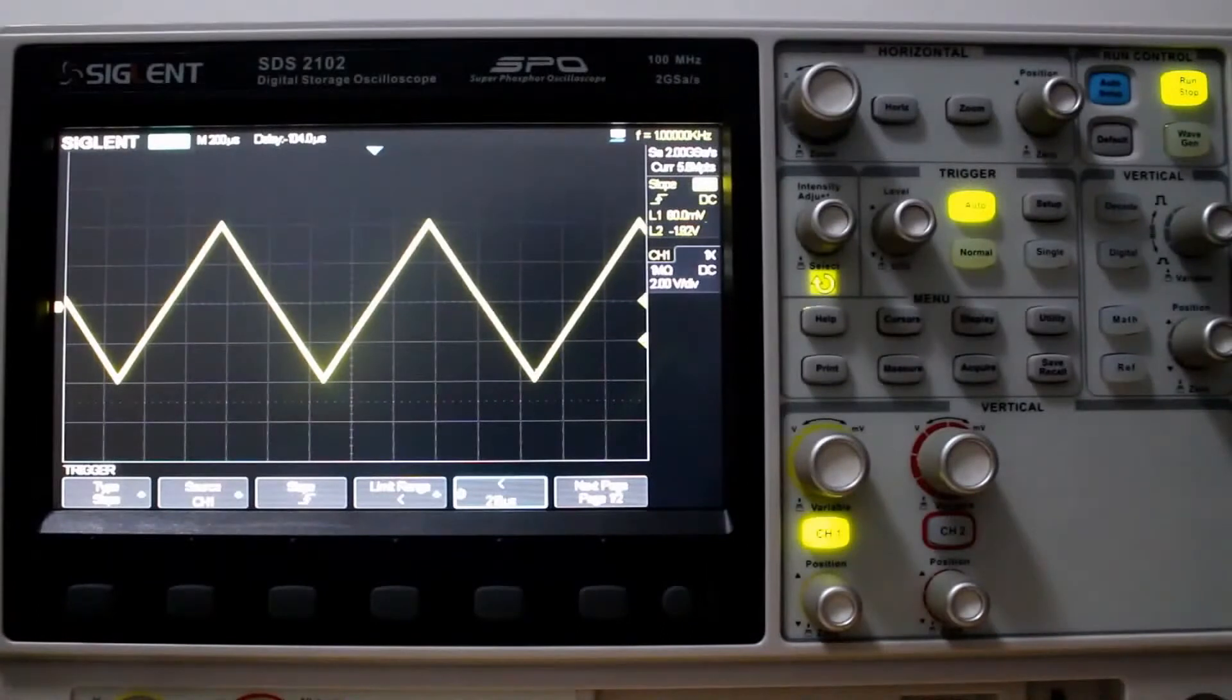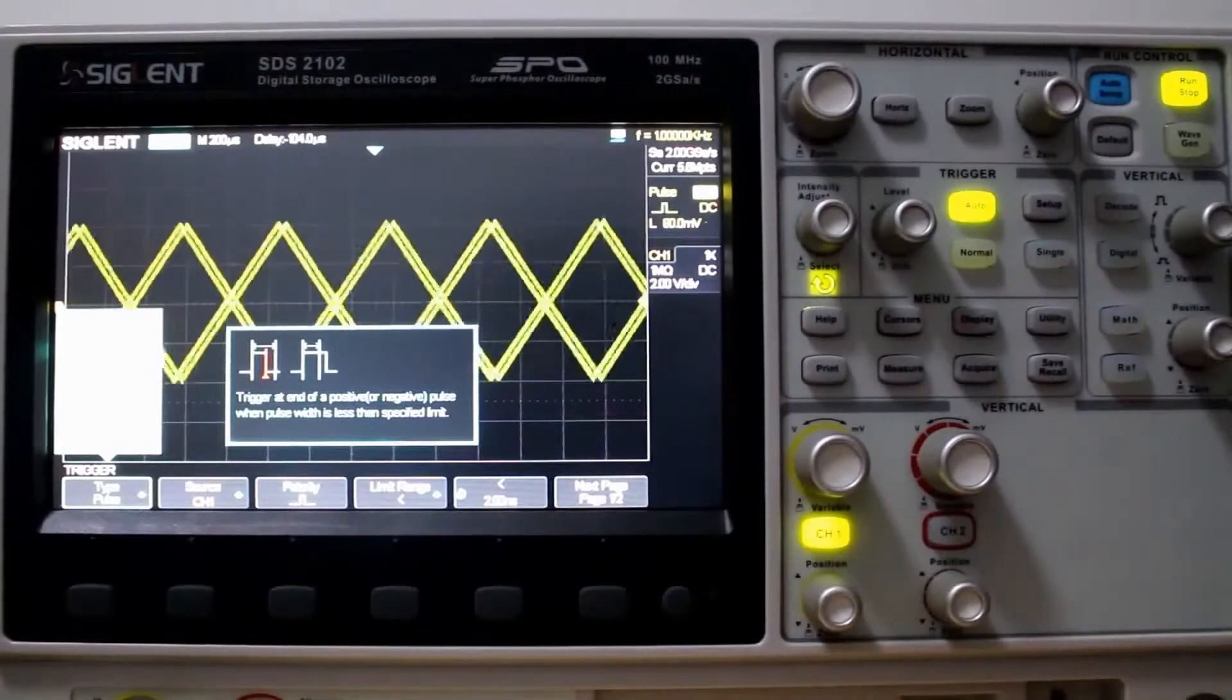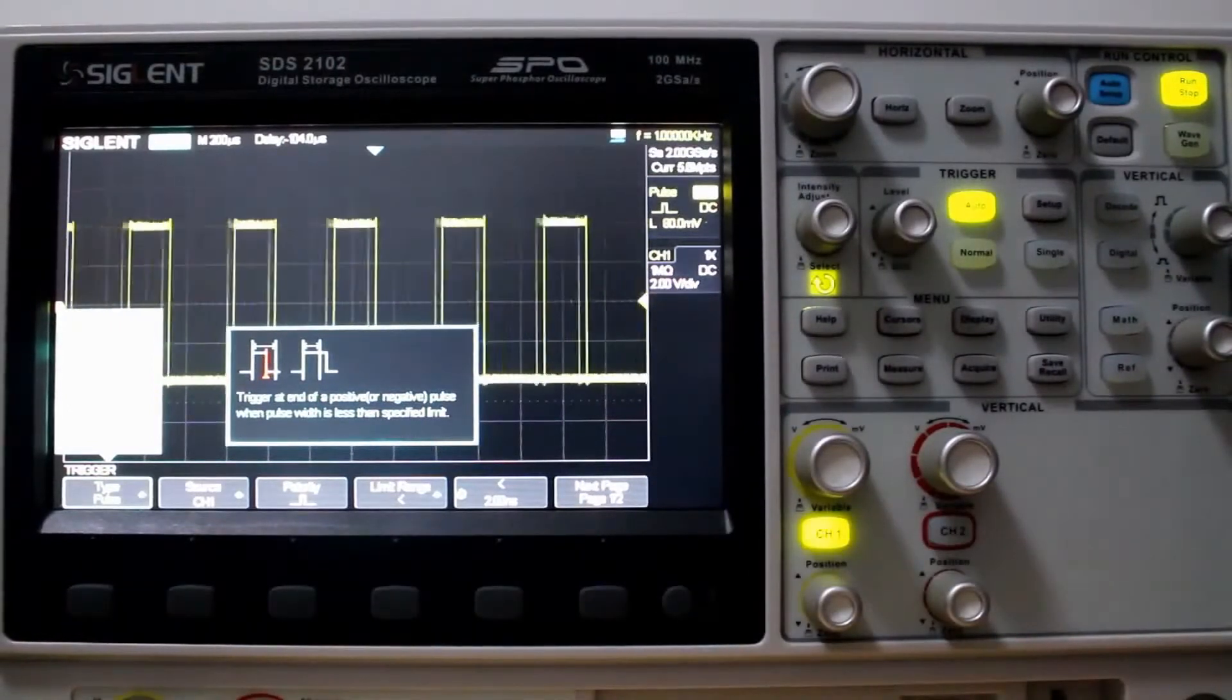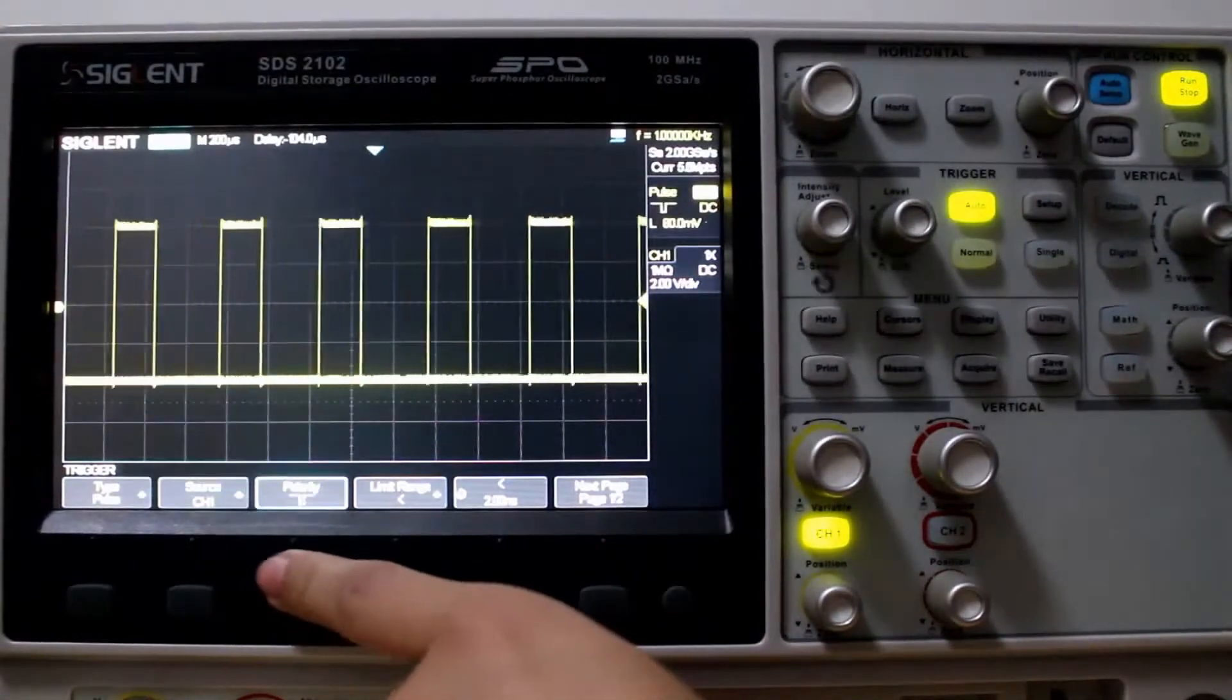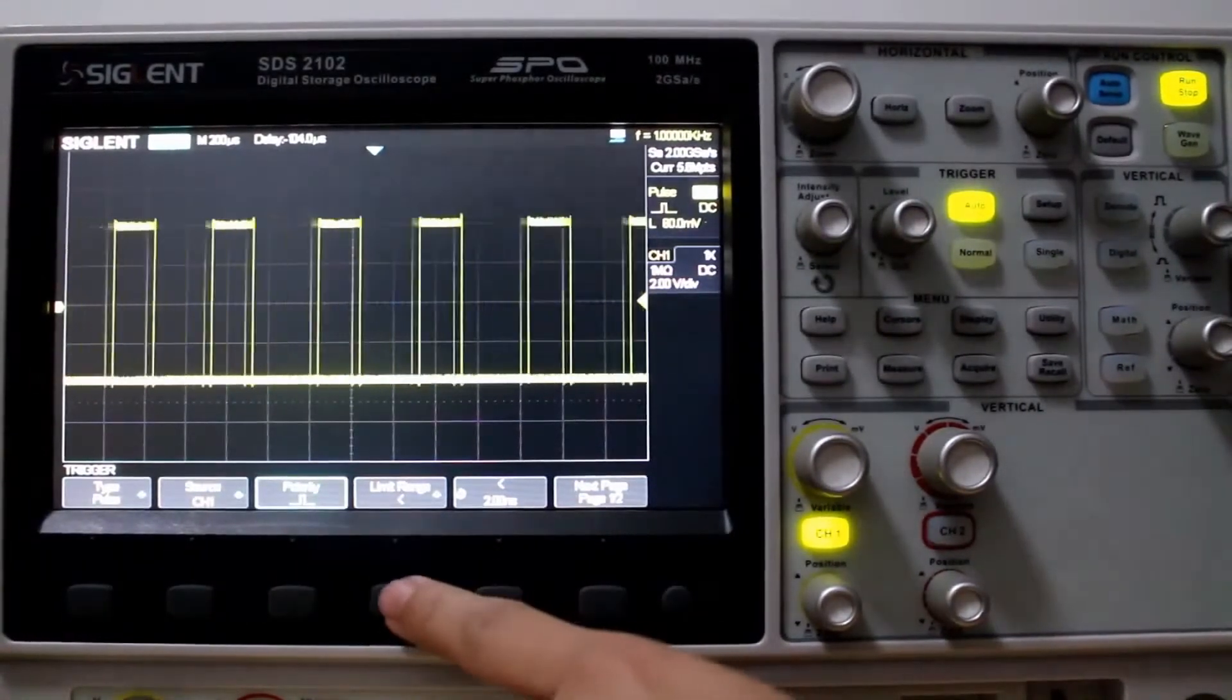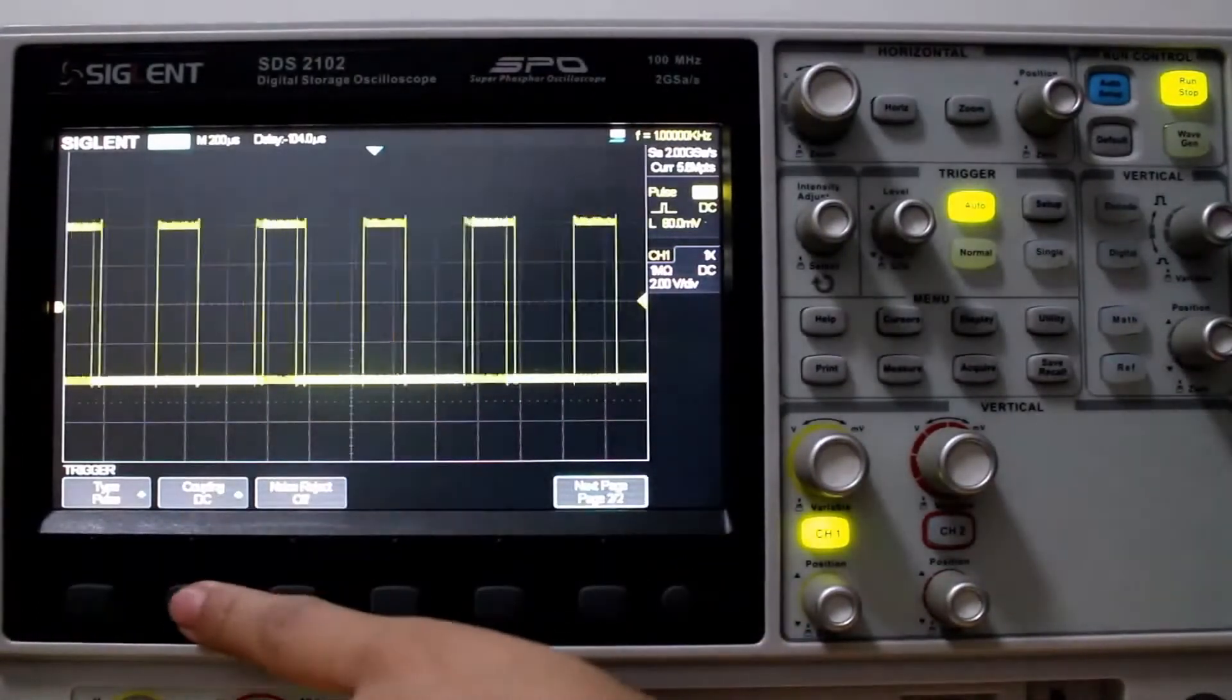Now we looked at a Slope wave. Let's change that to Pulse. And I'll change the output here to a Pulse wave. So we can measure that. Channel 1. Good. Polarity. Positive and negative. Let's set it to positive. Limit range. We can go less than. Good. Page two.